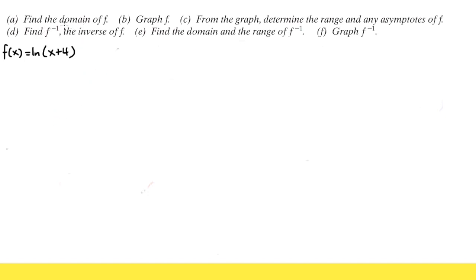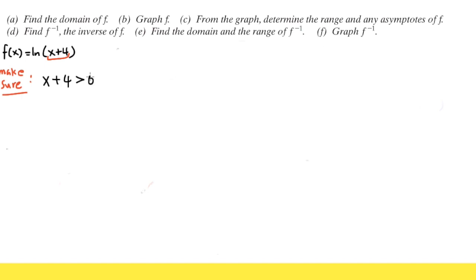For the first part, we are going to find the domain of f. This is ln of x plus 4. ln is log base e, so we are talking about a log function, which means we have to make sure the inside expression, which is x plus 4, has to be greater than 0. This is the inequality we set up for the domain. Subtracting from both sides, x is greater than negative 4.